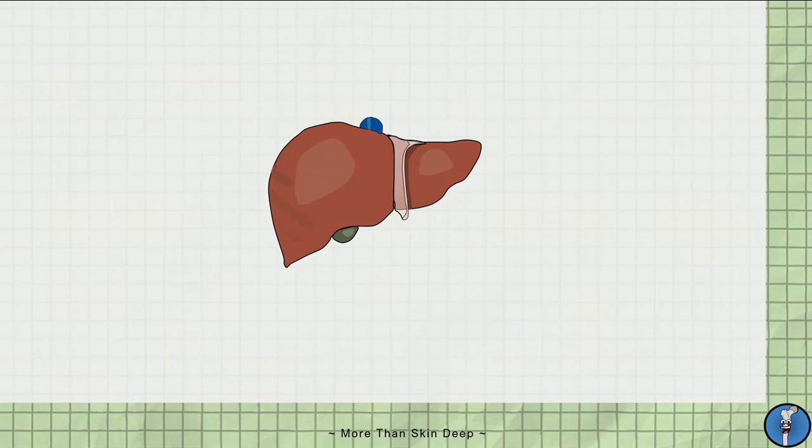The liver sits on the right side of the abdomen underneath the diaphragm. When visualizing the liver, it is divided into the right and left lobes by the falciform ligament. Falciform being Latin for sickle-shaped, which is how the ligament hugs the liver.